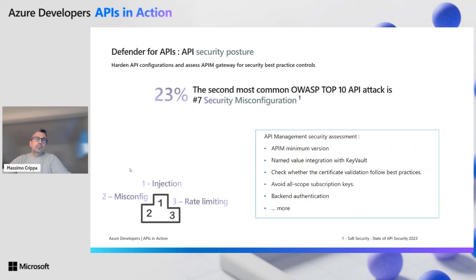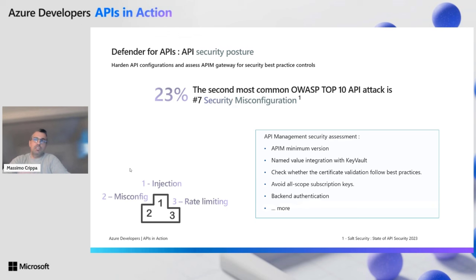Another thing Defender does is check for security misconfiguration. The second most common OWASP API Top 10 attack vector is because of misconfigured APIs. In this case, Defender goes and checks your Azure API Management and surfaces some security checks, coming back to you with a security assessment. Here on the right you can see examples of the kind of checks that are done. In our case, we were compliant with 90% of the checks. One of the things we added thanks to this assessment was enforcing the minimum TLS version for API Management, which I believe is a very good practice.